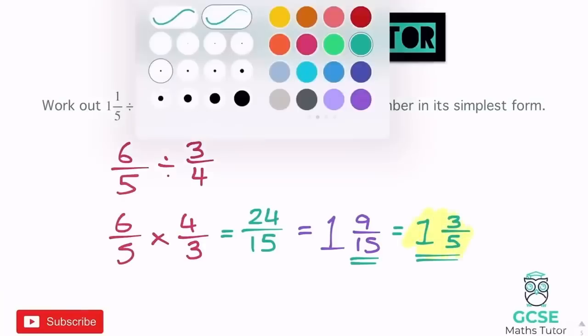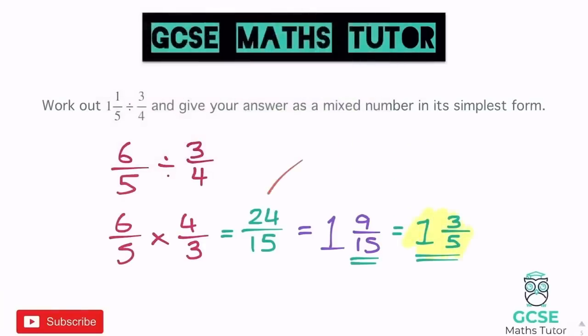There's also another approach: you could have simplified the fraction 24 over 15 first — the top and bottom both divide by 3, giving you 8 fifths — then turn it into a mixed number. 5 goes into 8 once with a remainder of 3, giving 1 and 3 fifths. It's completely up to you which method you prefer. Just remember: when dividing, keep the first fraction, flip the second, and change the sign to a times — or as some remember it: keep, flip, change.